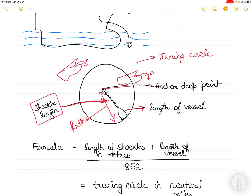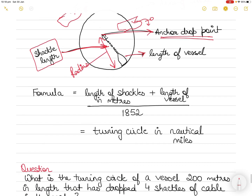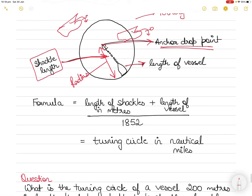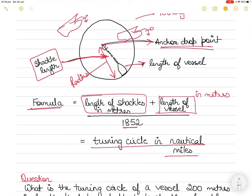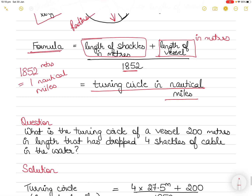Assuming a known anchor dropping point, the formula for the turning circle radius is: (length of shackle in meters + length of vessel in meters) ÷ 1852. We divide by 1852 because 1852 meters equals one nautical mile, so the resulting turning circle radius is expressed in nautical miles.